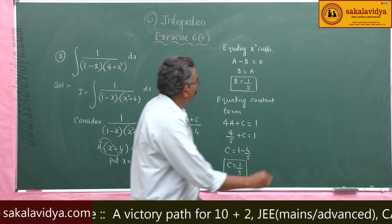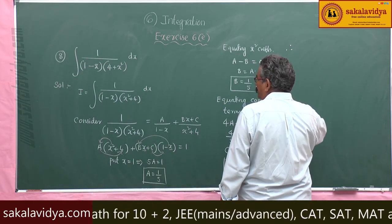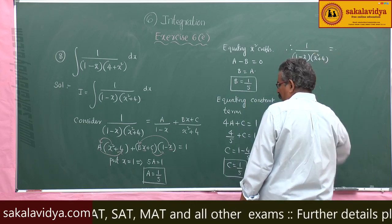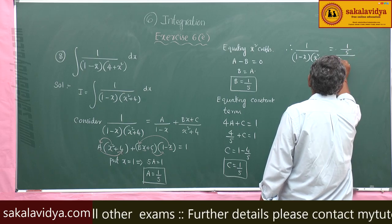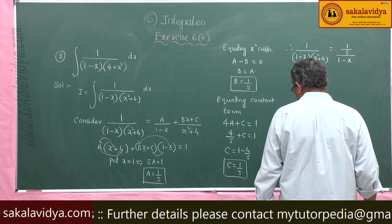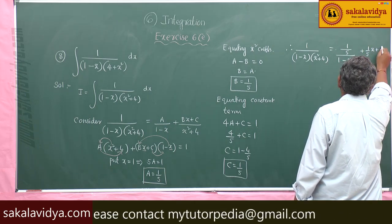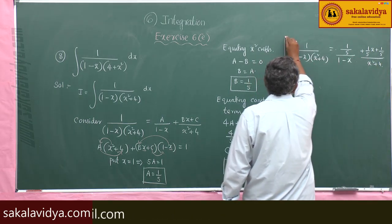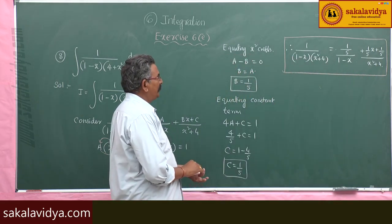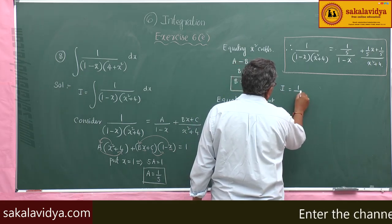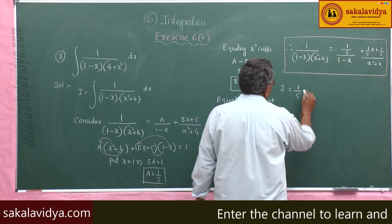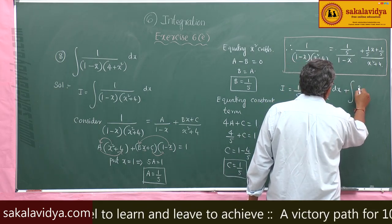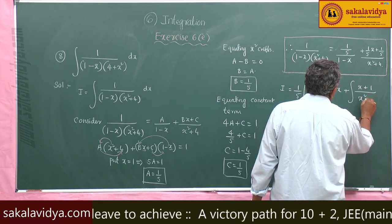Now writing the partial fractions: 1 by (1 minus x)(x² plus 4) equals 1 by 5 times 1 by (1 minus x) plus (1 by 5 times x plus 1 by 5) by (x² plus 4). We integrate: I equals 1 by 5 times integral of 1 by (1 minus x) dx plus integral of (x plus 1) by (x² plus 4) dx.